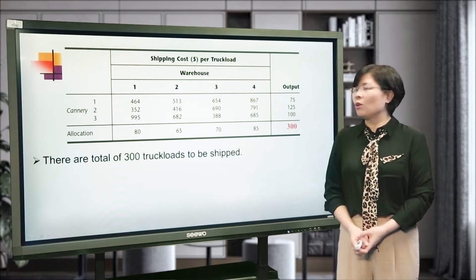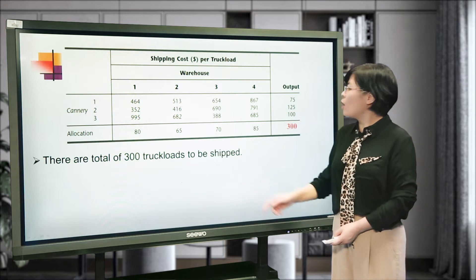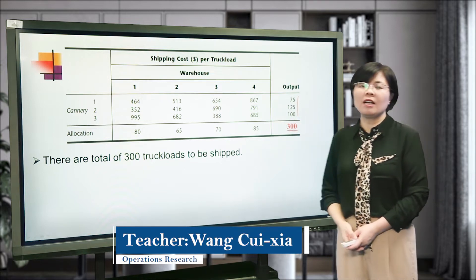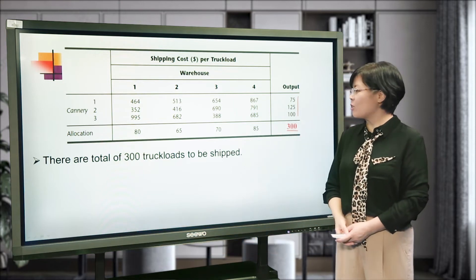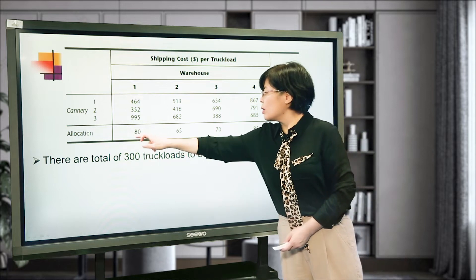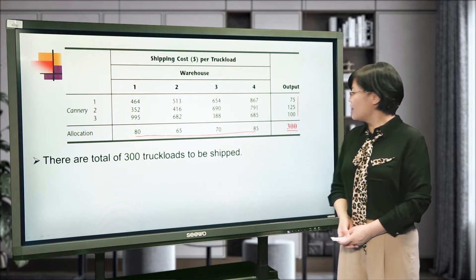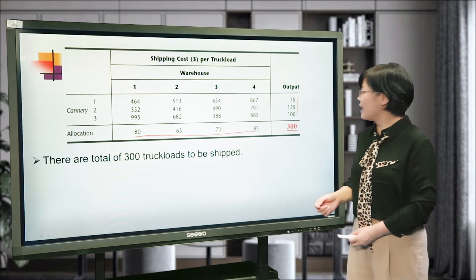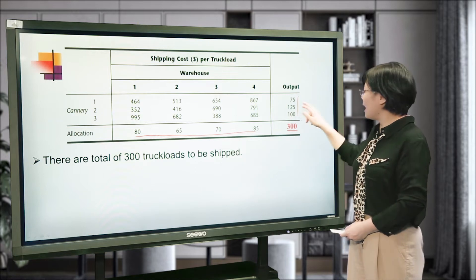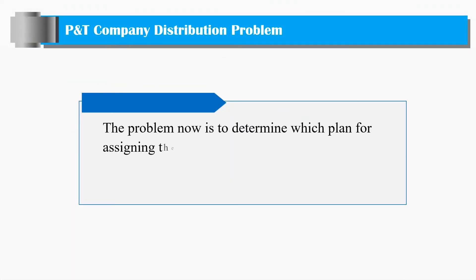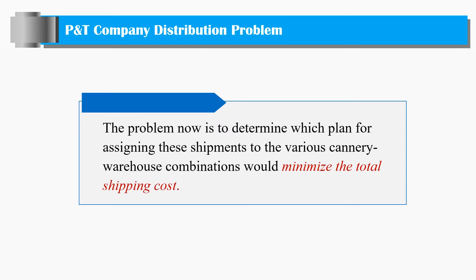Looking at this table, we can find the total output — the total supply sums to 300. Also, the total demand needed is the same sum. This problem has the characteristic that total supply equals total demand. The problem is to determine which shipment plan for the various cannery-to-warehouse combinations would minimize the total shipping cost.